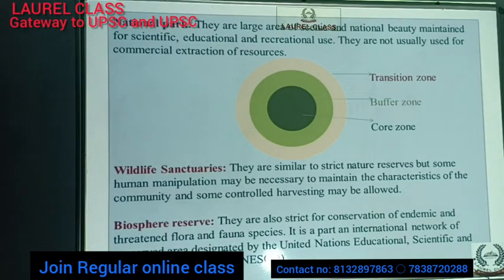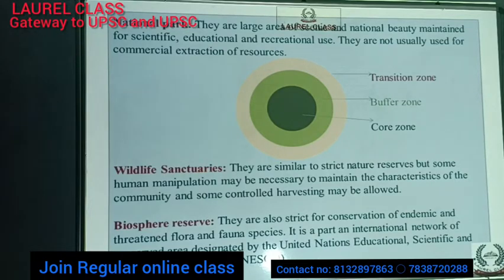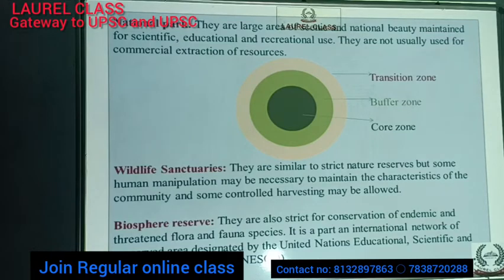We will discuss three major protected areas: national parks, wildlife sanctuaries, and biosphere reserves. National parks are large areas maintained for scientific, educational, and recreational use; they are not usually used for commercial extraction of resources. National parks are highly restricted areas, whereas wildlife sanctuaries have lesser restrictions. National parks have clearly marked boundaries, whereas wildlife sanctuaries do not have permanent boundaries.